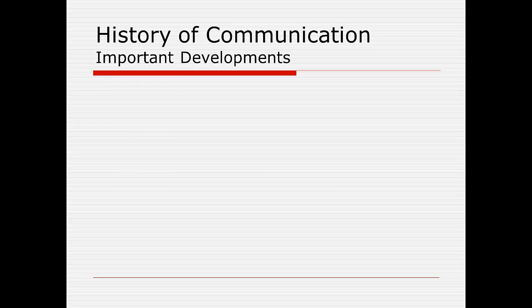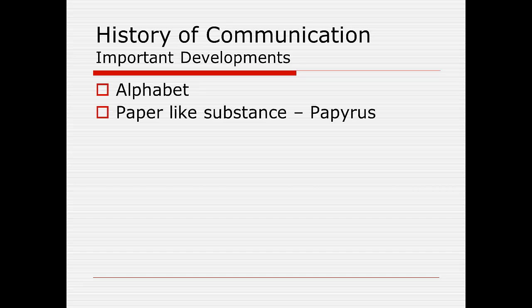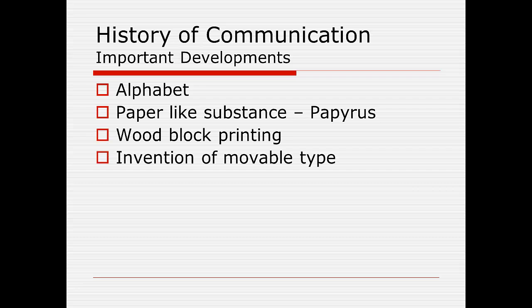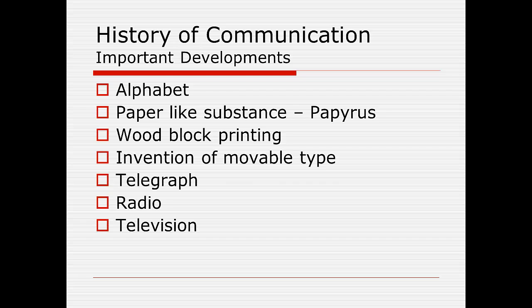We're going to talk about some important historical developments in communication: the first being the alphabet and the development of paper and then the first printing, the invention of movable type, and then some of the modern electronic communication devices such as the telegraph, radio, television, and computer.